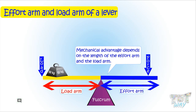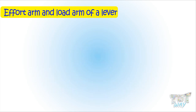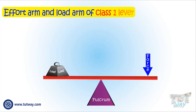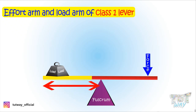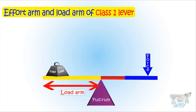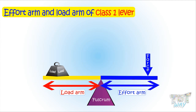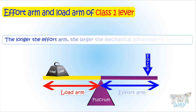Now let's see the effort arm and load arm of different types of levers. In a class 1 lever, which has the fulcrum in the center, the load arm is the distance between the load and the fulcrum, and the effort arm is the distance between the effort and the fulcrum. Remember, the rule is: the longer the effort arm, the larger the mechanical advantage of the lever.